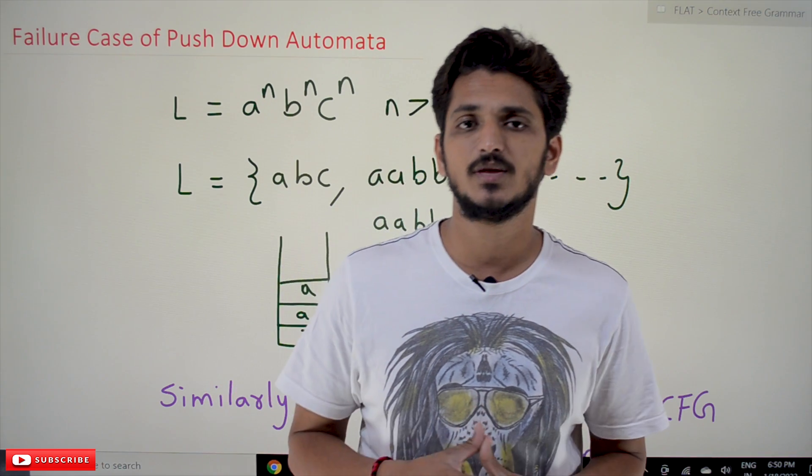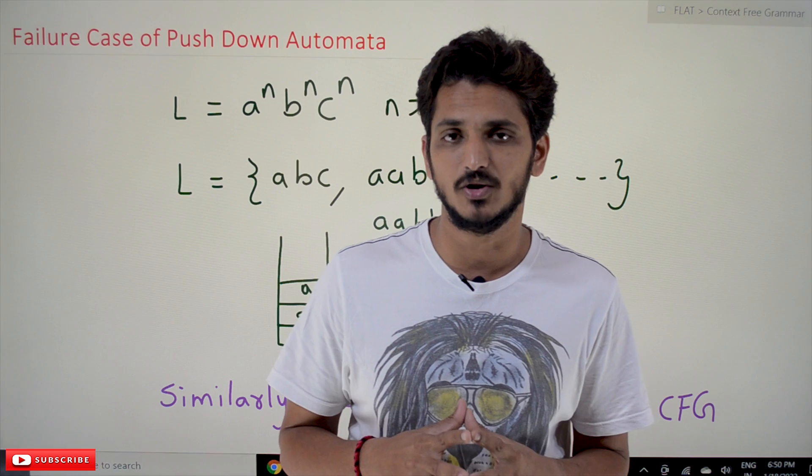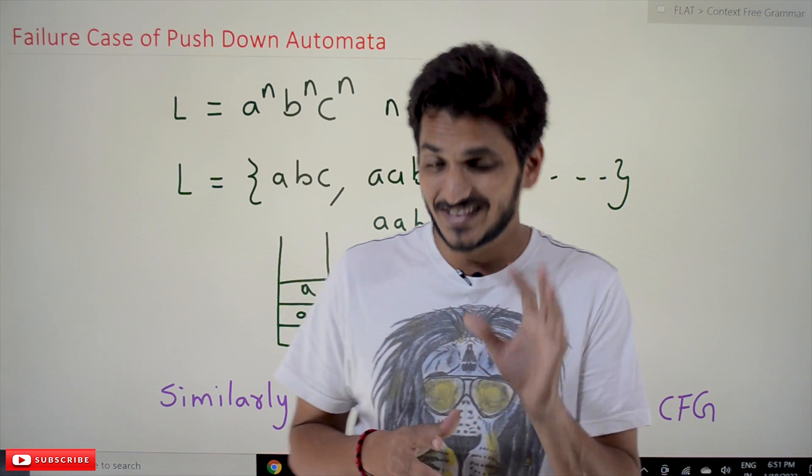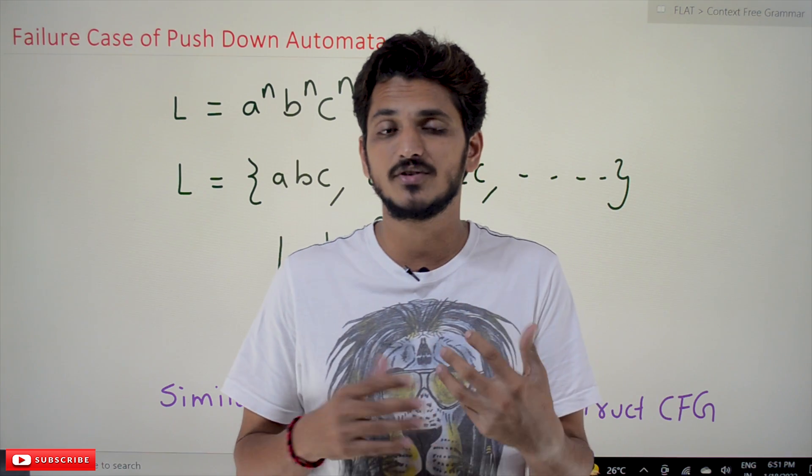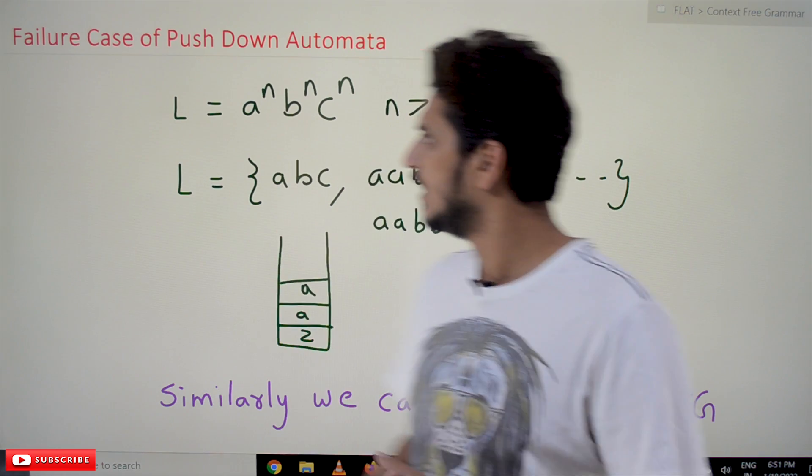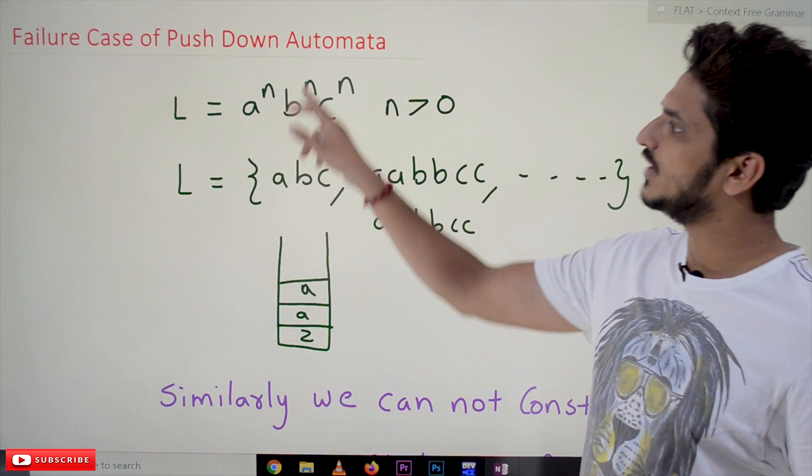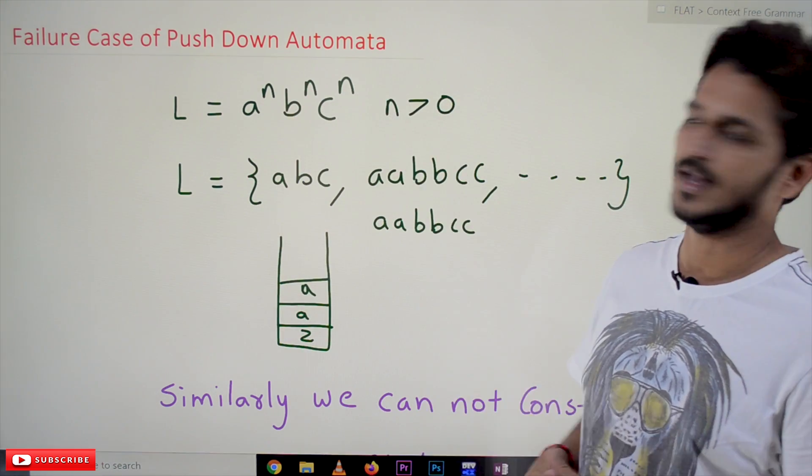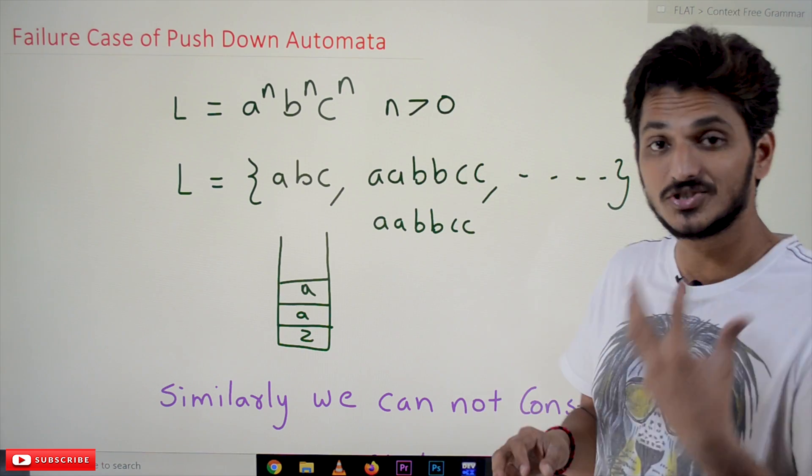The link for the playlist is provided in the description below. Coming to today's class, let's take an example and understand what's the failure case of pushdown automata. Let's take a language L equals a^n b^n c^n where n greater than 0.